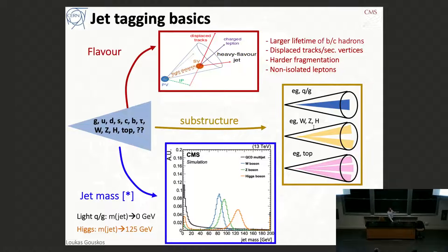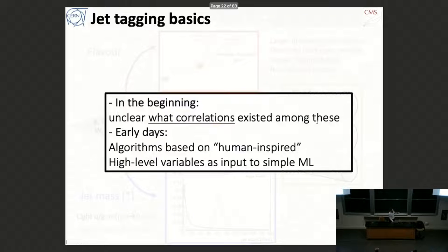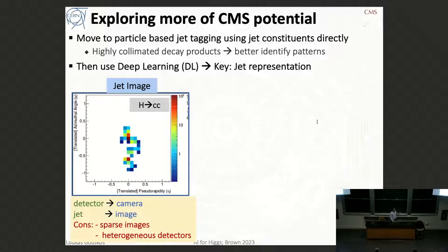Another powerful handle is to check the energy flow patterns inside the jet. For quarks or gluons this is a single prong; for a Higgs decaying to two particles we look for two prongs. The jet mass is also informative: if you have a Higgs and reconstruct all particles, you expect the jet mass to be around the Higgs mass of 125 GeV, while for lighter quarks and gluons constituting the background, the mass is very close to zero. In the early days, we designed algorithms based on human-inspired high-level observables with simple shallow machine learning, but what changed the game was moving to lower-level information using particles directly as inputs to deep learning algorithms.